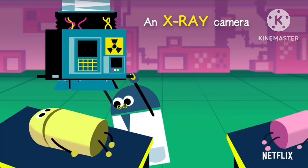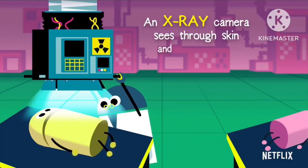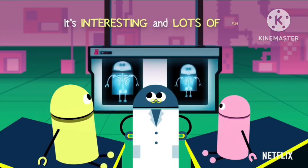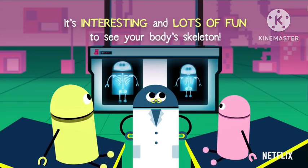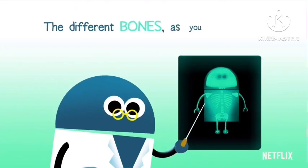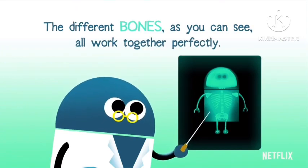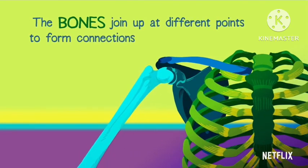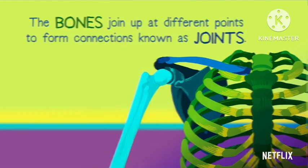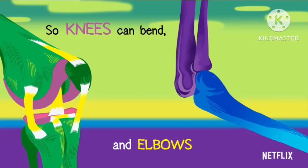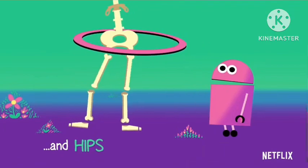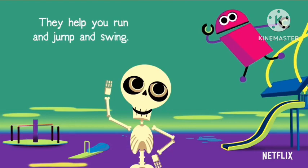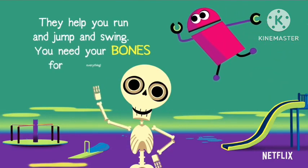An x-ray camera sees through skin and photographs your bones within. It's interesting and lots of fun to see your body's skeleton. The different bones, as you can see, all work together perfectly. The bones join up at different points to form connections known as joints, so knees can bend and elbows too, and hips can twist the way they do. They help you run and jump and swing. You need your bones for everything.